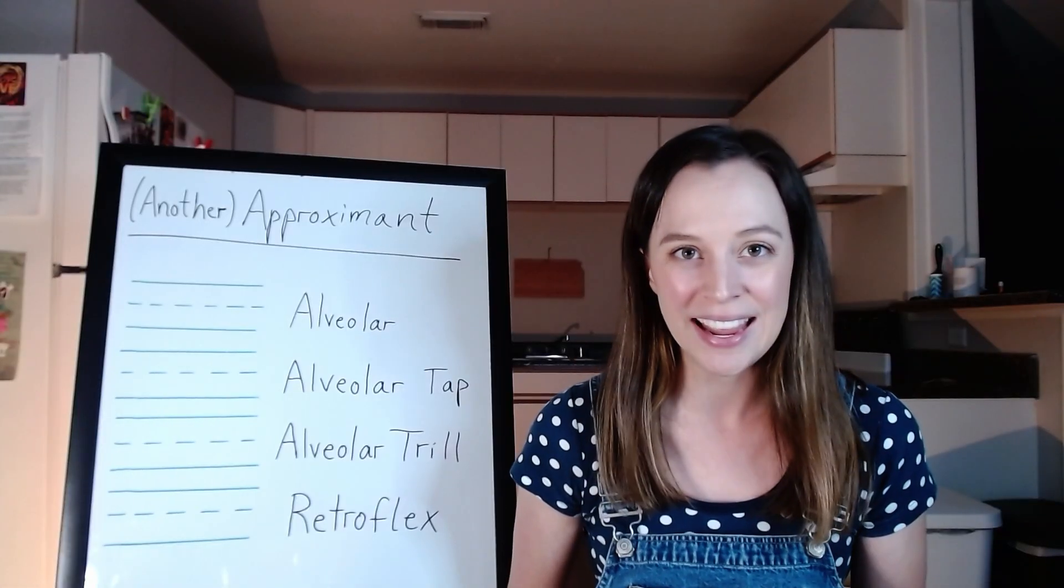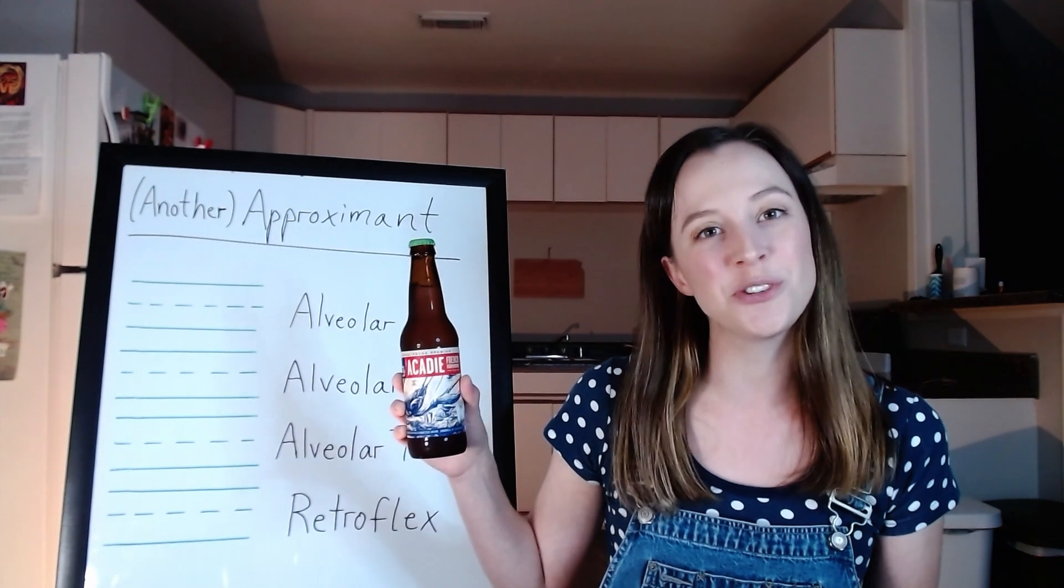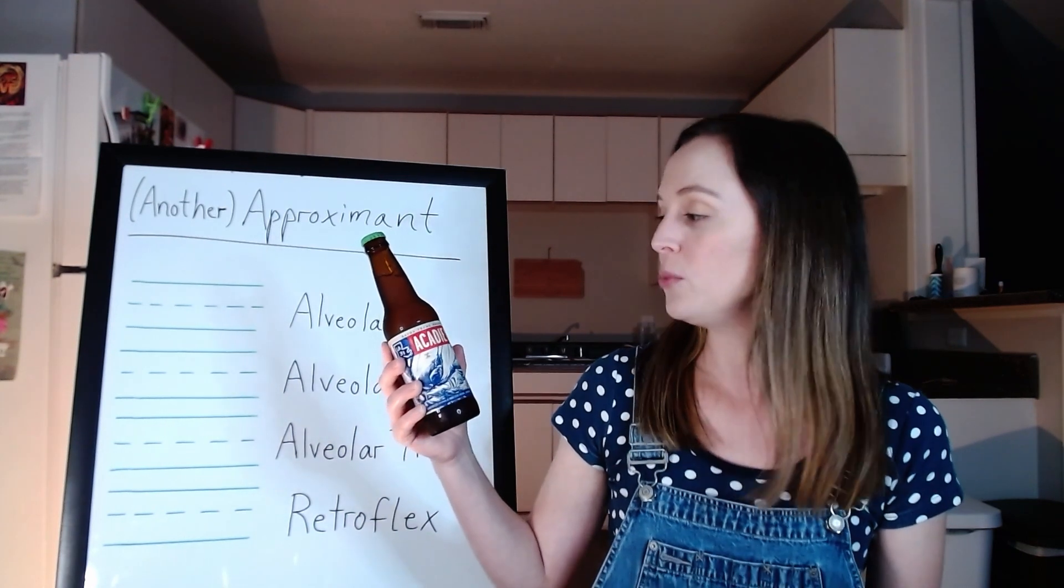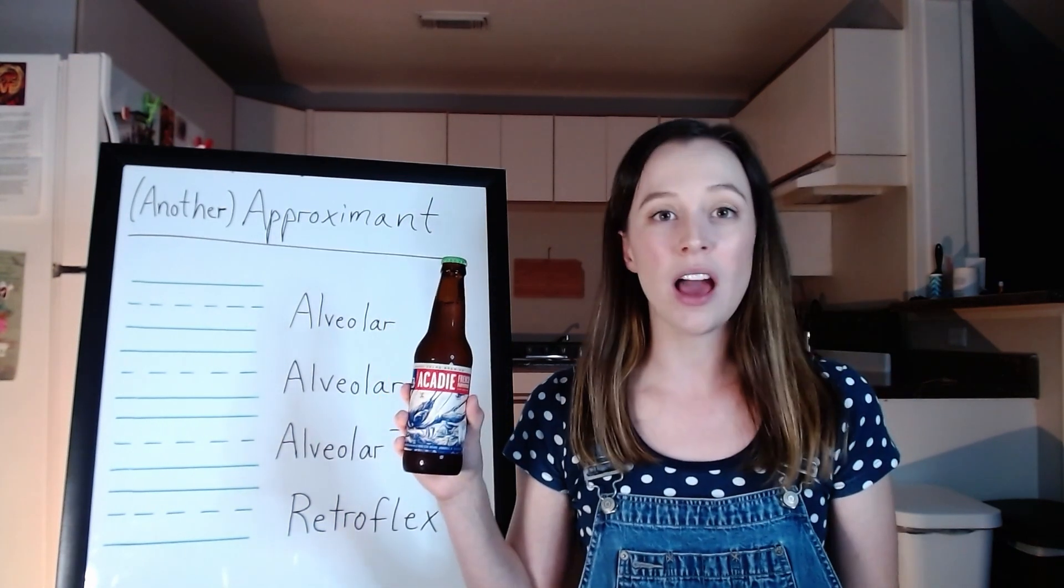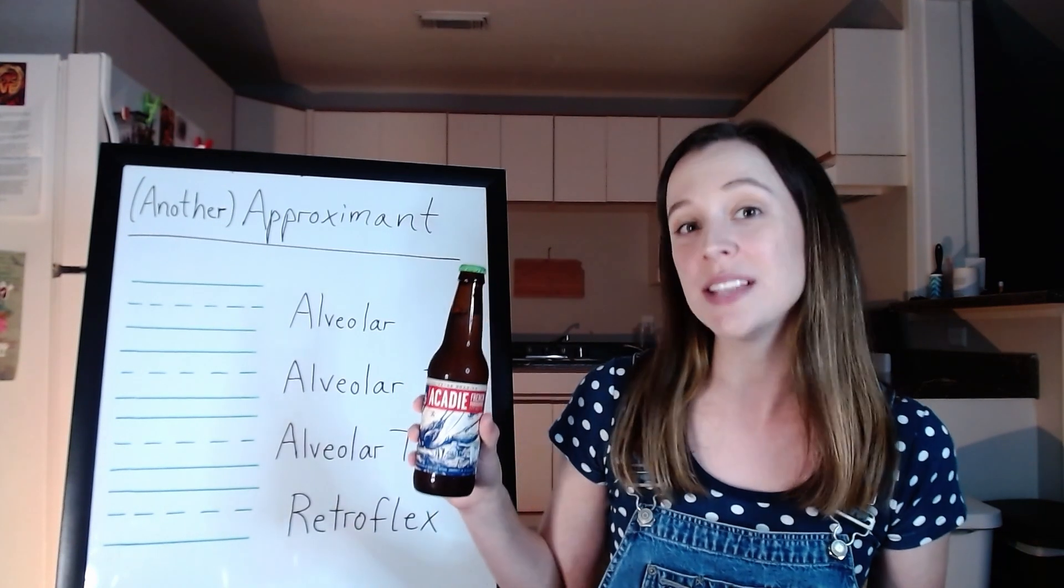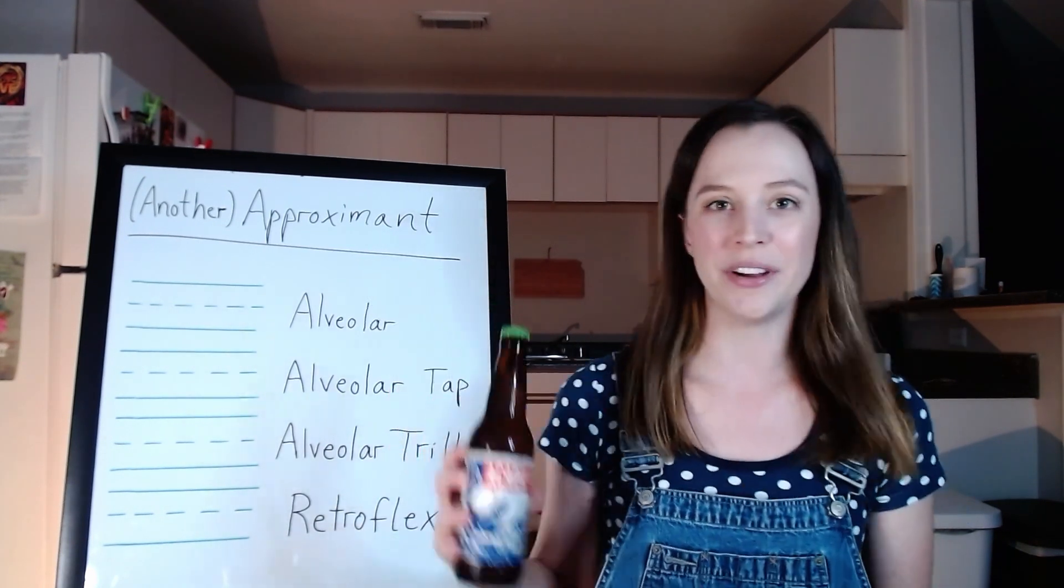Today we're going to learn all about the approximant that we might think of as R, but before we do that, we're going to talk about what we're drinking. So today, from Bayou Teche Brewing in Arnaudville, Louisiana, I am having the Acadie French Farmhouse Ale, and I'm very excited about this.